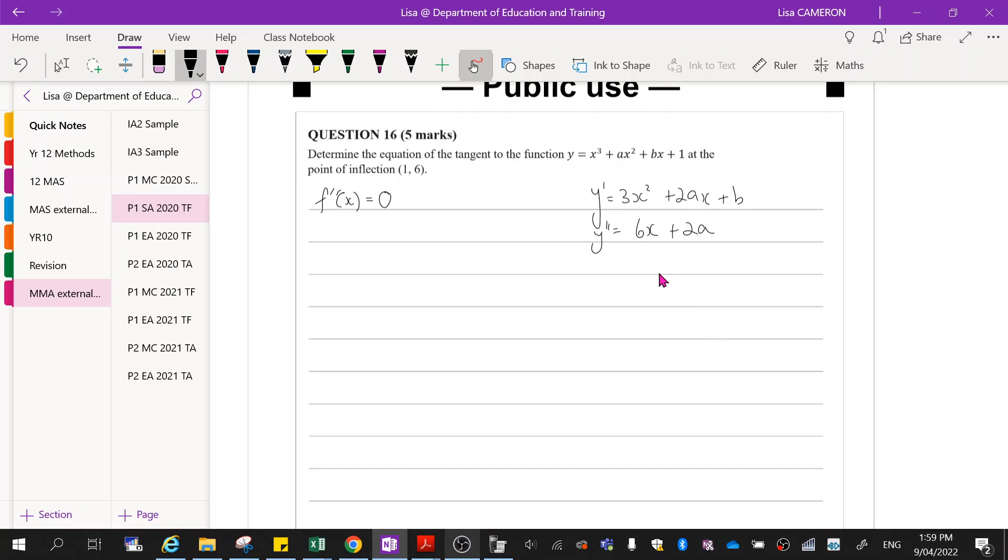Now we can find the point of inflection. First thing we're going to do is use that it's a point of inflection. We're going to use our second derivative and that it should be equal to 0. So if it's equal to 0 and this is where it is, then that should be our x-coordinate.